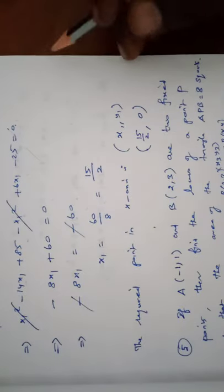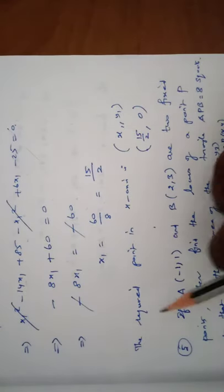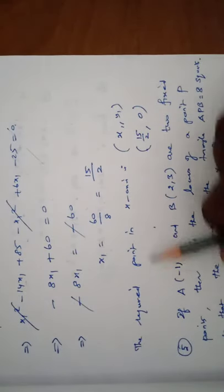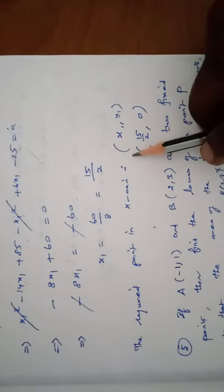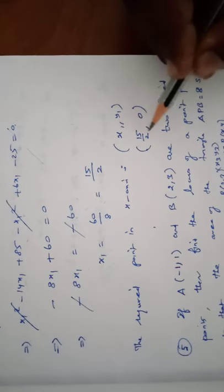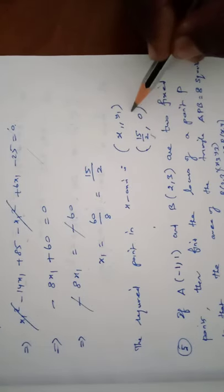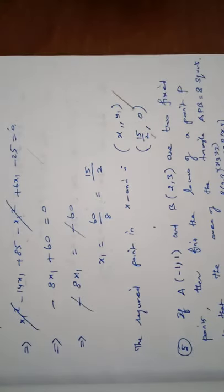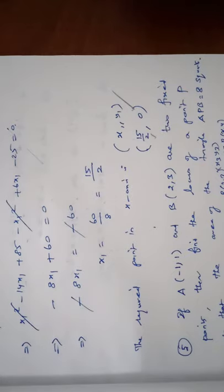Therefore x1 equals 60 divided by 8, which simplifies to 15 by 2. Since y1 is already 0, the required point on the x-axis is (15/2, 0).